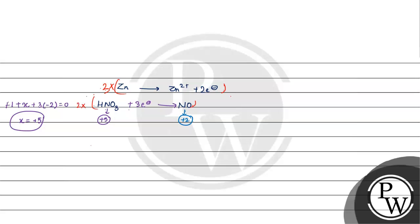We multiply to balance electrons: 3 Zn gives 3 Zn²⁺ plus 6 electrons. And 2 HNO3 gains 6 electrons to give 2 NO.